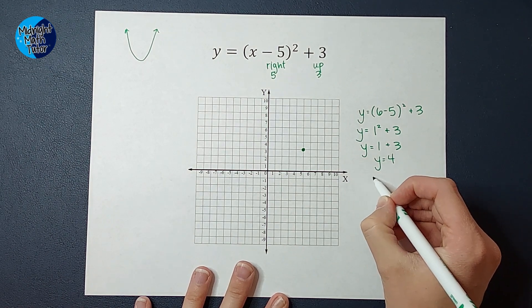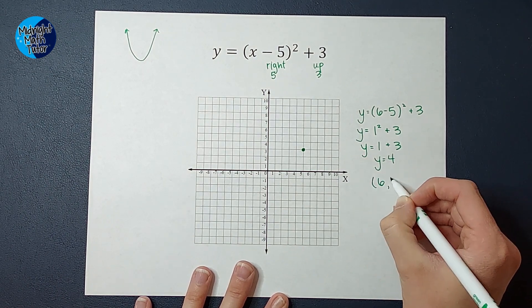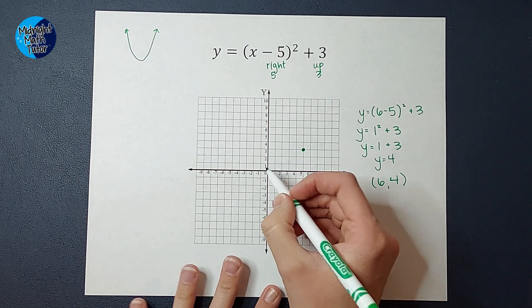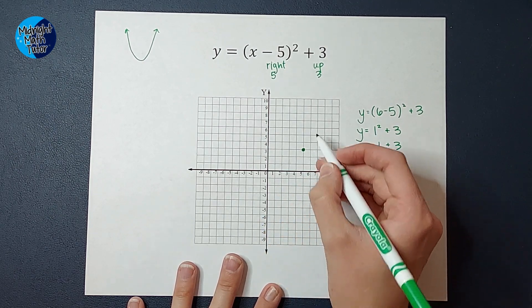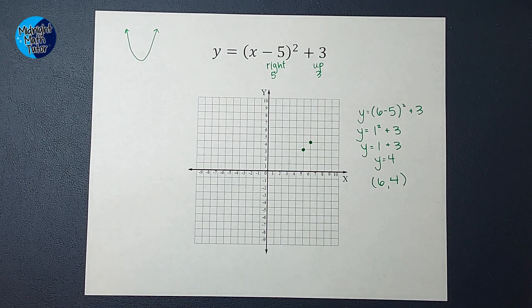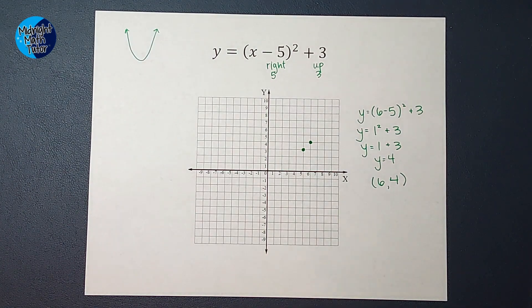So I plugged in six, and I got four. So I'm going to go over six, up one, two, three, four, and that is another point on my parabola.